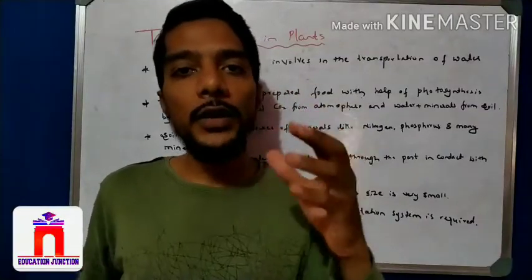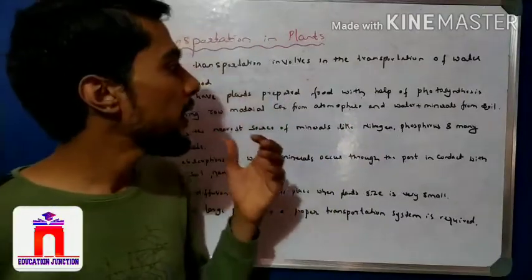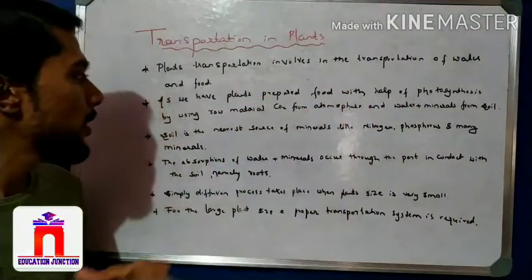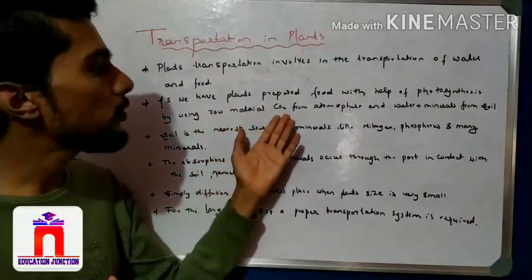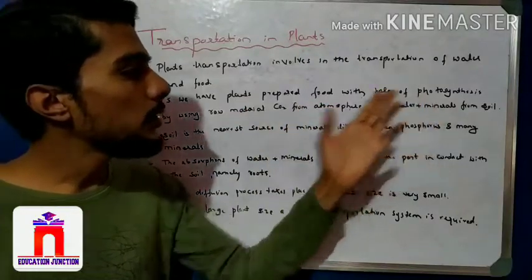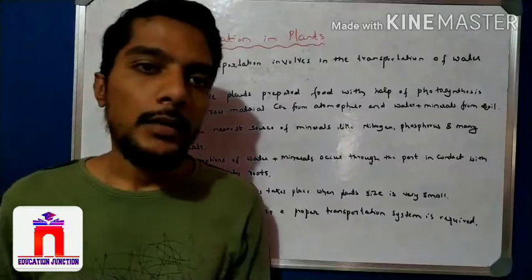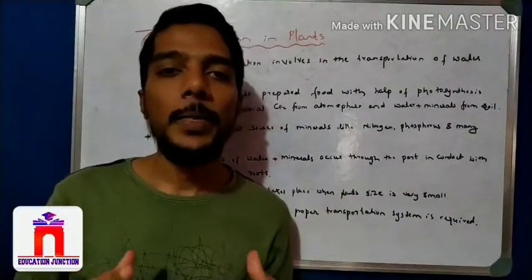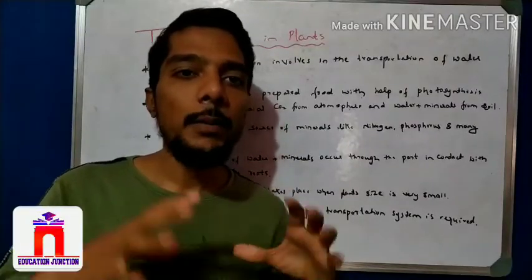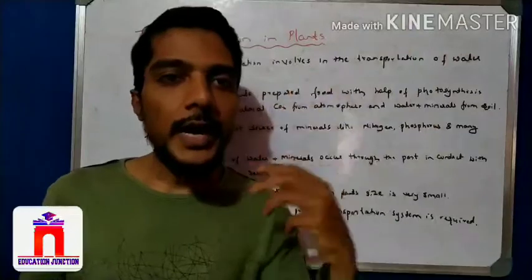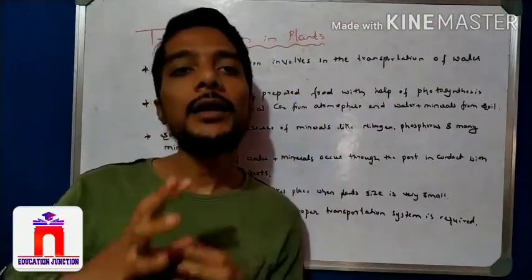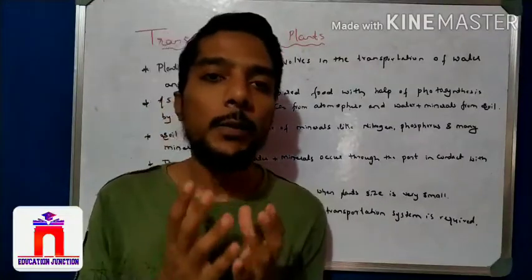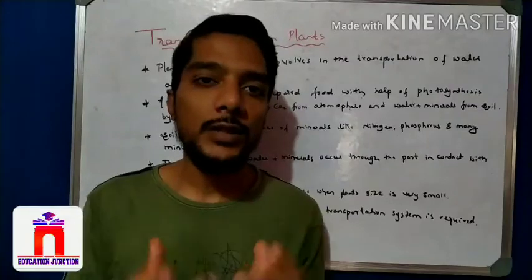From the root to the leaf, the transportation system is in place. Plants prepare food with the help of photosynthesis, using raw materials — atmospheric carbon dioxide and water plus minerals from the soil. The plant requires many raw materials: carbon dioxide, water, and minerals. Carbon dioxide present in the atmosphere is transported by the stomata, and water and minerals present in the soil are transported through the roots.